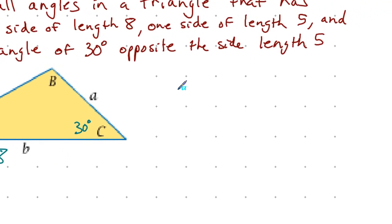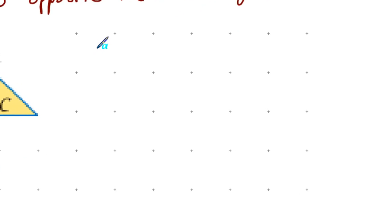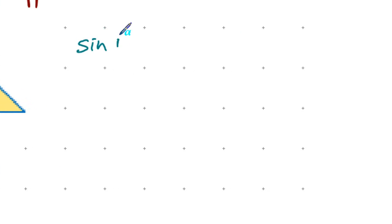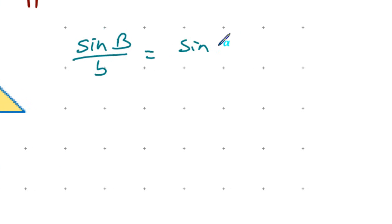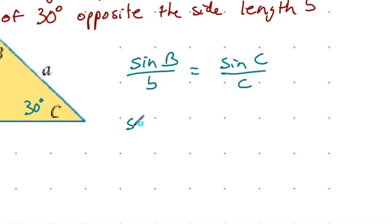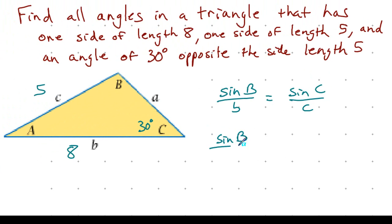Using the Law of Sines: sine of B over b equals sine of C over c, giving sine of B over 8 equals sine of 30 degrees over 5.